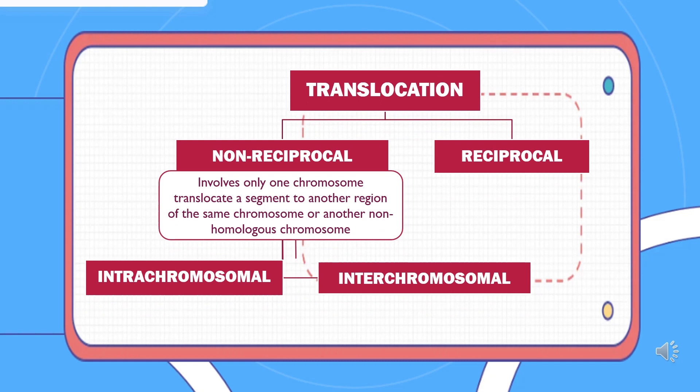Non-reciprocal translocation involves only one chromosome translocating a segment to another region of the same chromosome or another non-homologous chromosome. There are two types of non-reciprocal translocation: intra-chromosomal and inter-chromosomal.